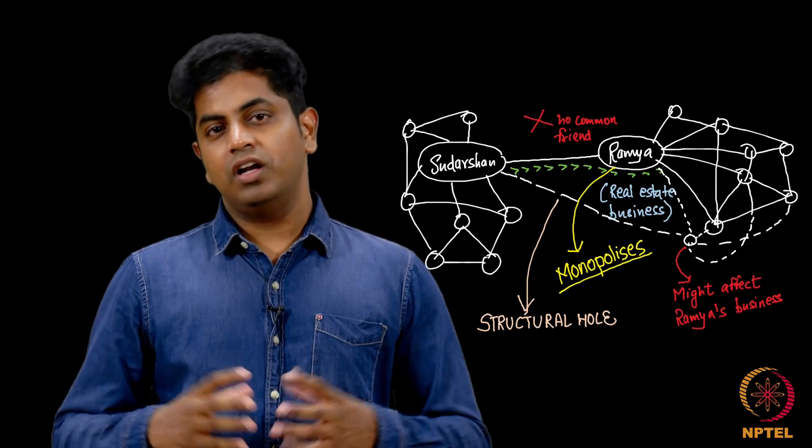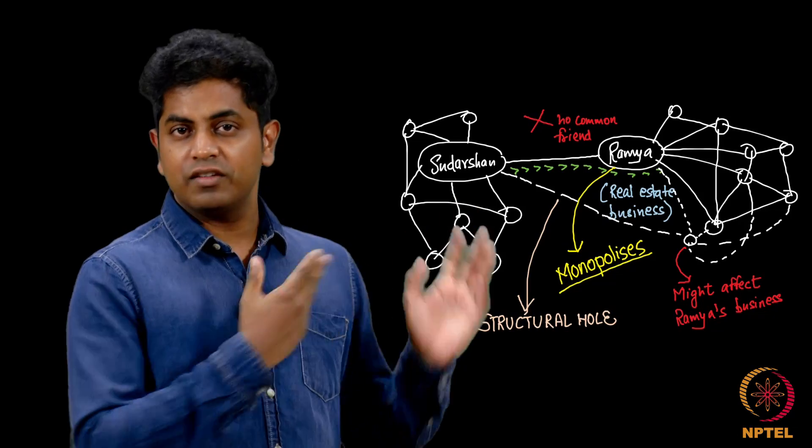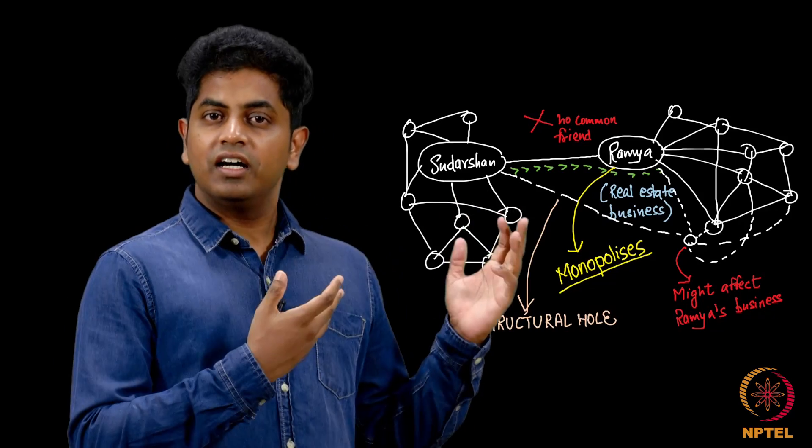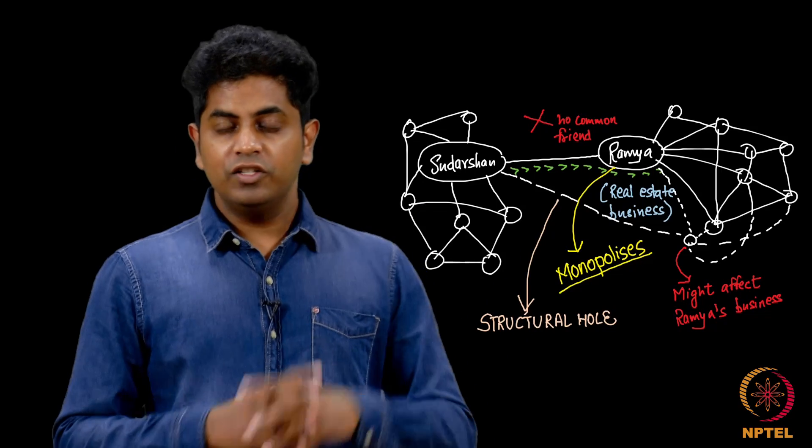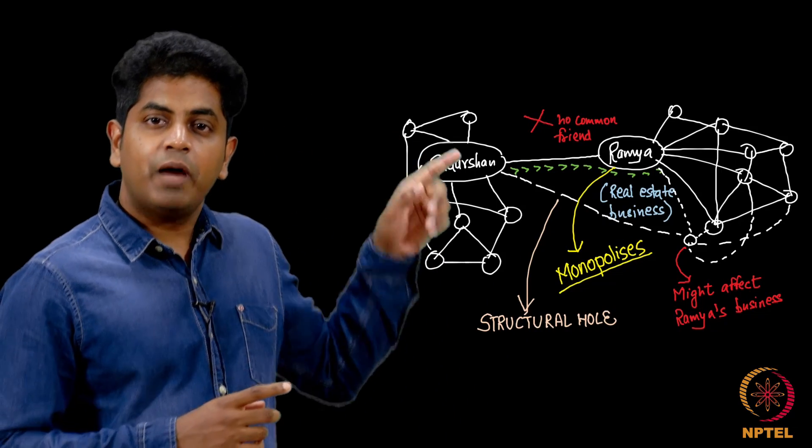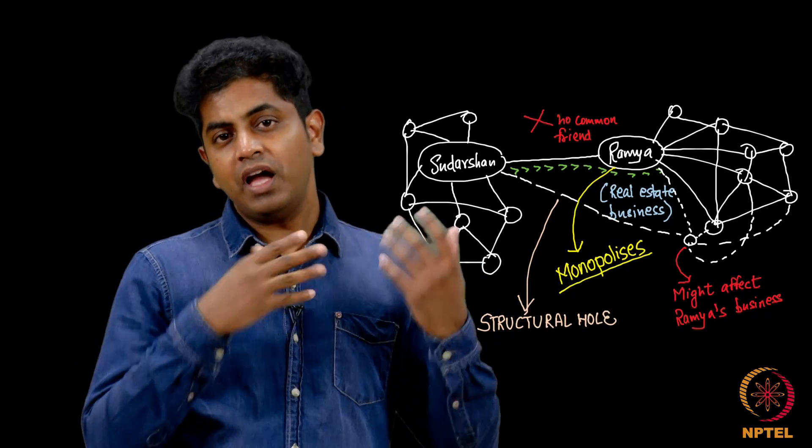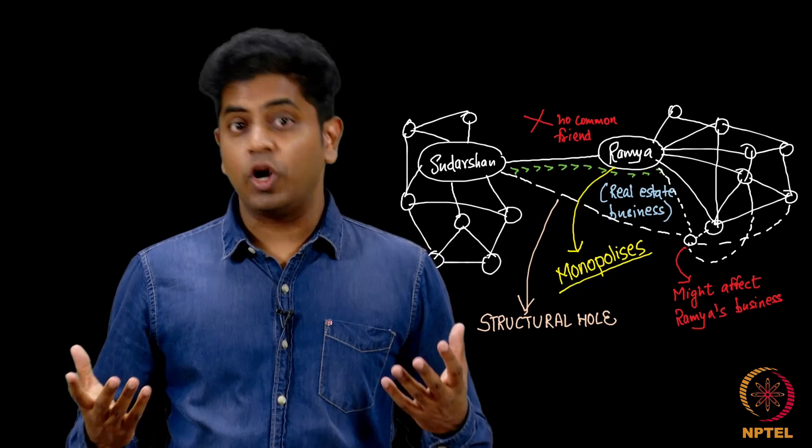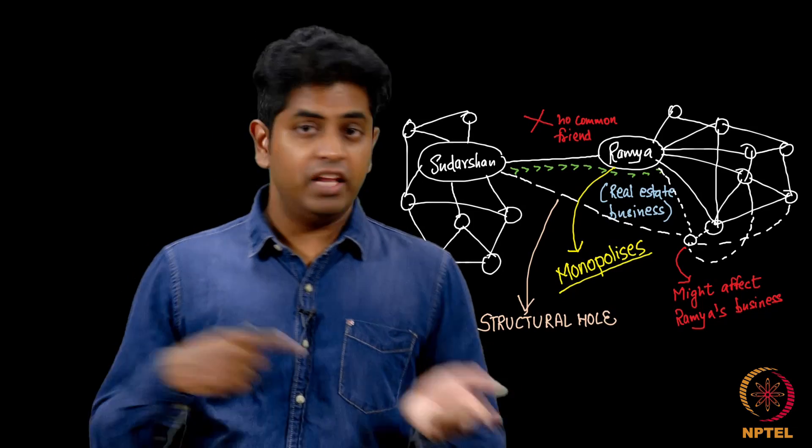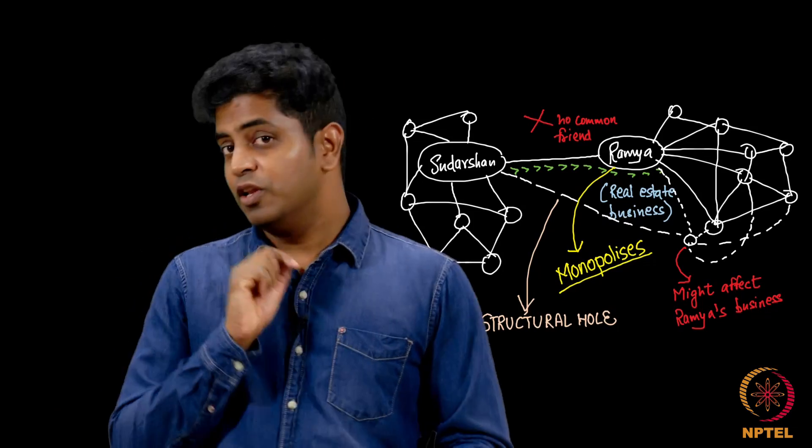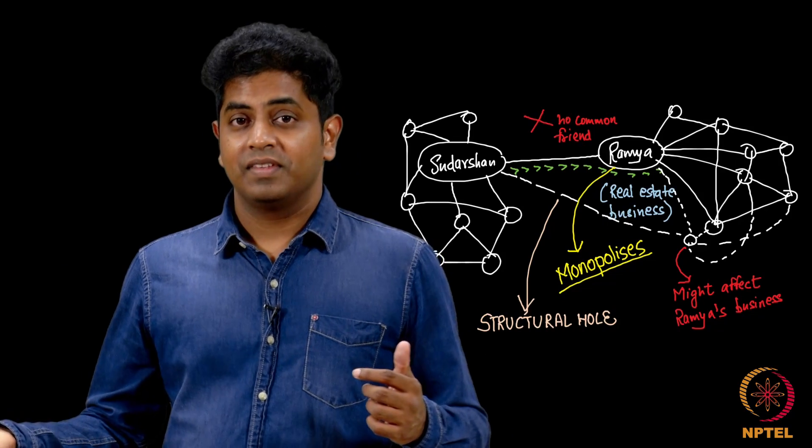This concept is called the structural holes. There are structural holes in these friendship networks, in real life transaction networks, in business transactions. Some people do not want people from this side community to meet anyone from that side community. Ramya here acts more like a broker. She ensures that nobody from this side gets to know anyone from that side, because she will lose business in case anyone here gets to know anyone that side.